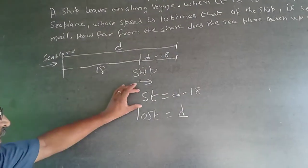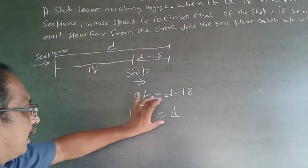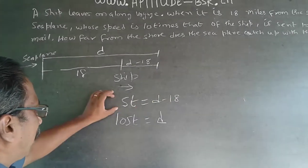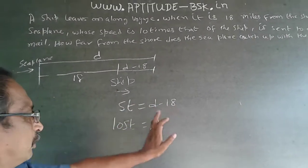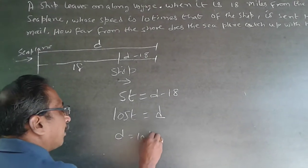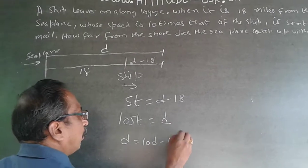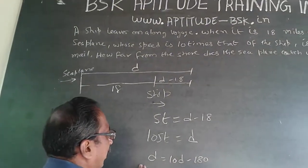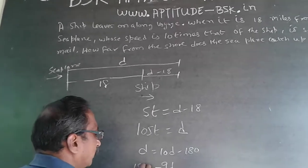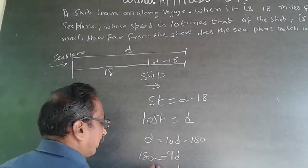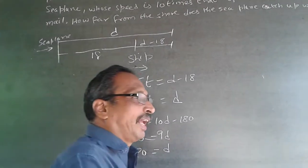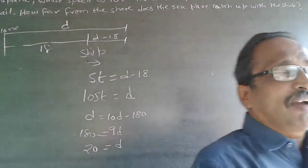Since ST equals D minus 18, and 10ST equals D, D equals 10 times (D minus 18), which gives D equals 10D minus 180. Rearranging: 9D equals 180, so D equals 20. The answer is 20 miles. That is the full working method.